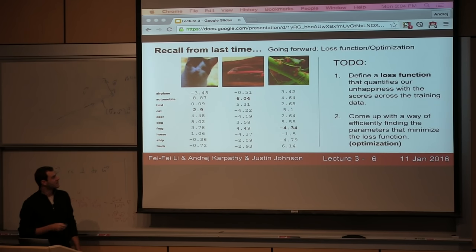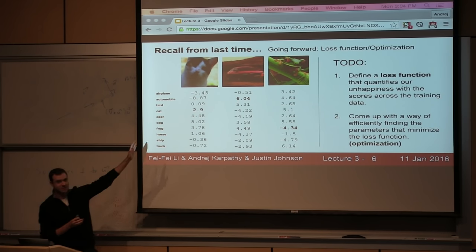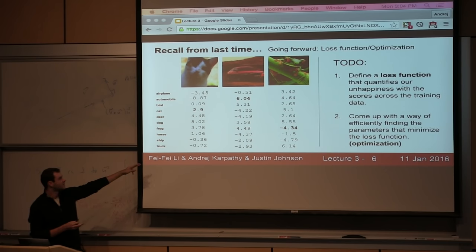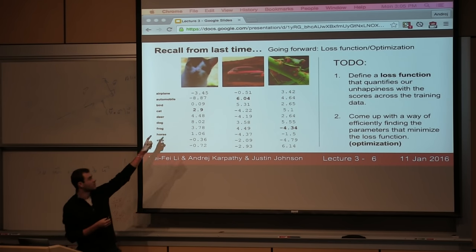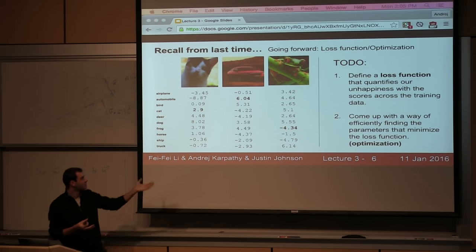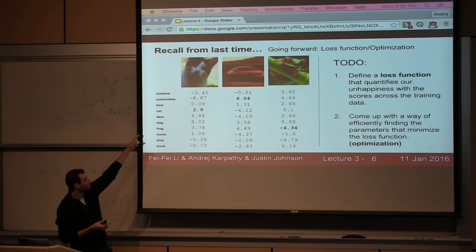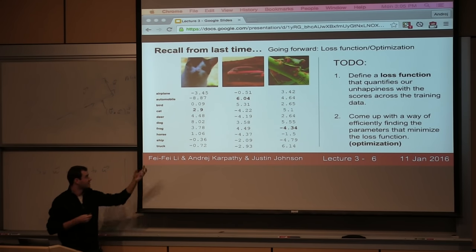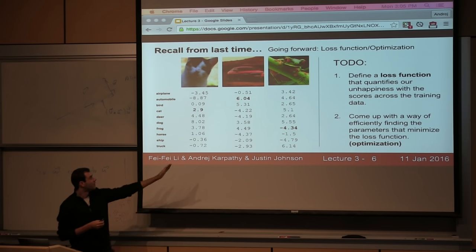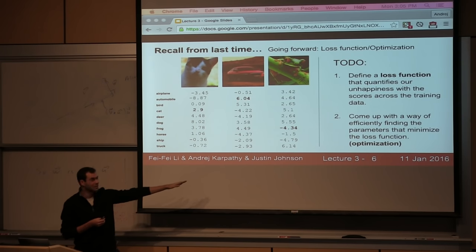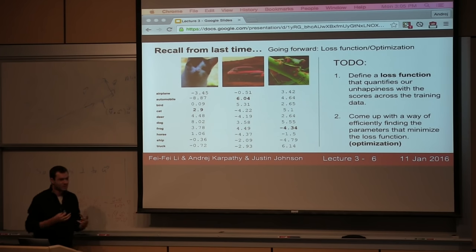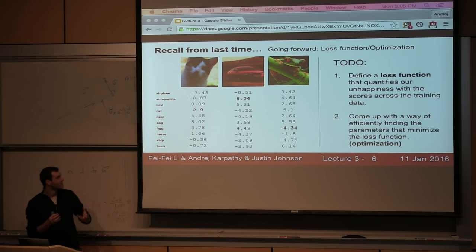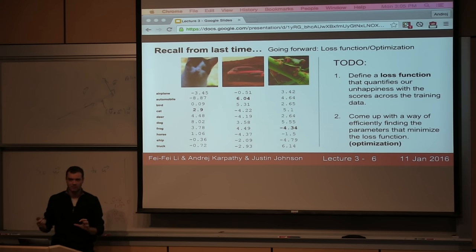By the end of last class, we got to this picture where we have a training dataset of three images along the columns, ten classes in CIFAR-10, and this function f assigns scores for every image with some particular setting of weights chosen randomly. Some results are good and some are bad. For example, the correct class cat got a score of 2.9, in the middle, with some classes scoring higher — which is not good. The car was well classified, but the frog was not.